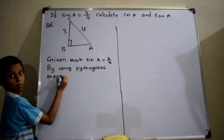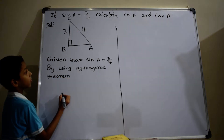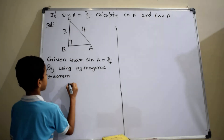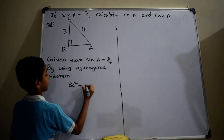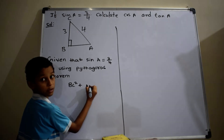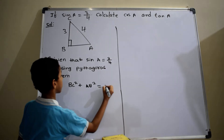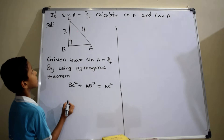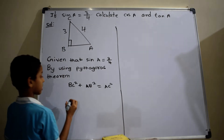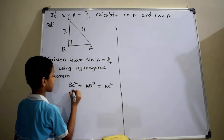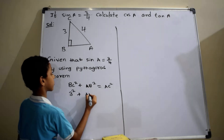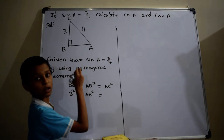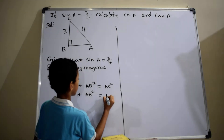By using the Pythagorean theorem: BC squared plus AB squared equals AC squared. Given the length of BC equals 3, write 3 squared plus AB squared equals AC squared. Given the length of AC equals 4, write 4 squared.